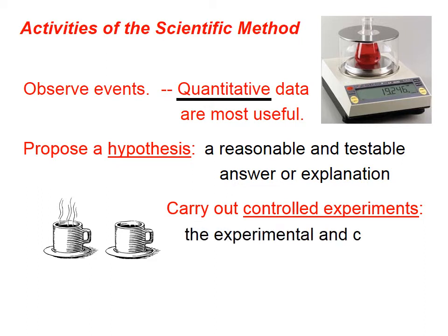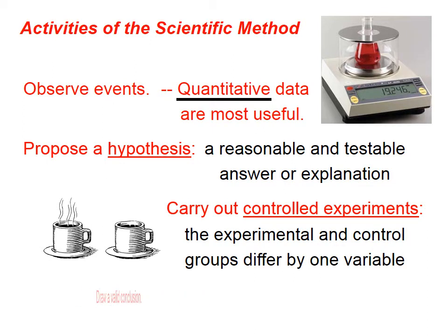In the scientific method, we carry out controlled experiments, which means that the experimental and the control groups differ by only one variable. When we're comparing two experimental setups, those two setups must be exactly the same except in one respect. Then if we observe a difference in the results in those two setups, we have good confidence that the one variable that was different somehow influenced that different result.